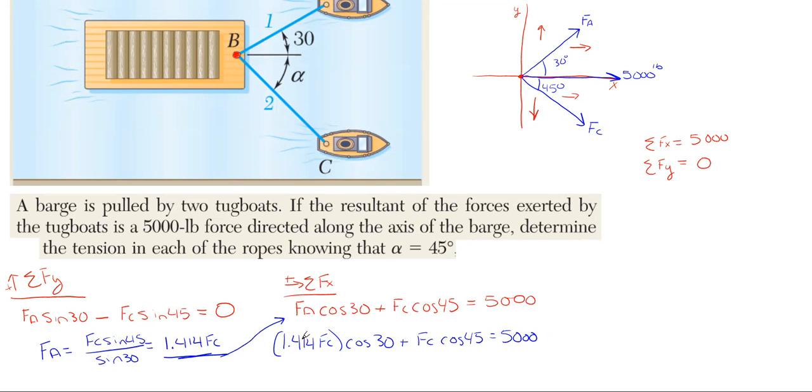So if you take 1.414 times cosine of 30 and add it with cosine of 45, we end up with 1.932 F_C equal to 5,000 pounds.